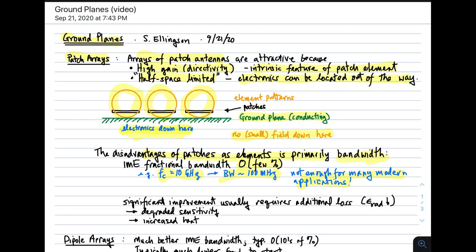Which means you either have to do something complicated with the patch, or you have to look for another element. Things that significantly improve the performance of patch arrays in terms of bandwidth usually require additional loss. In fact, loss is the primary way to improve the impedance match efficiency of any element. So this obviously is detrimental in the sense that radiation efficiency goes down. So the sensitivity is degraded. And also, because you have loss, you have heat dissipated by that loss. So we have increased heat. Those are the pros and cons of a patch array.